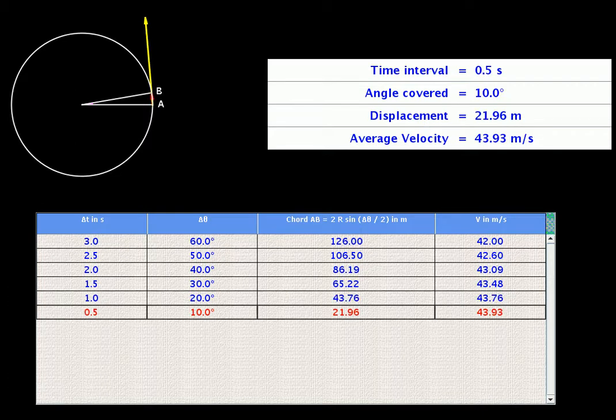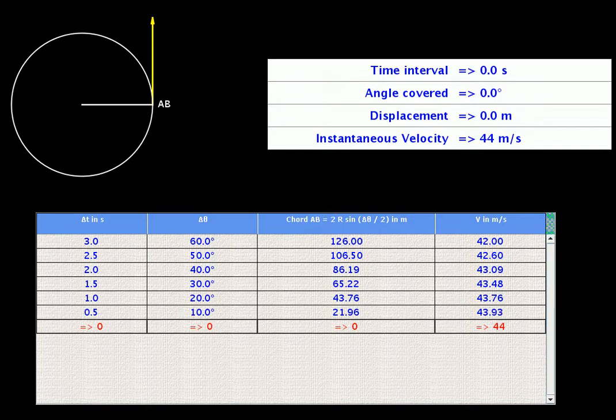If we had used a duration of say 0.01 second, we would have found average velocity value differing from 44 meters per second by a very very small amount. As long as we do not talk of zero duration, we can do these calculations.